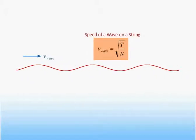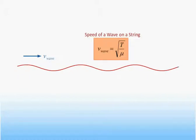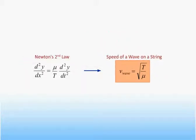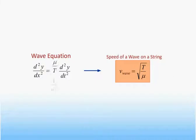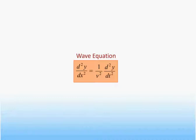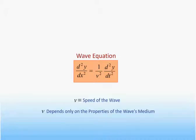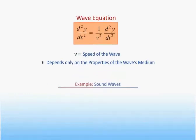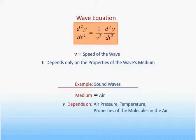On the last slide, we obtained the important result that the speed of waves on a string depends only on properties of the string itself, namely its tension and its mass per unit length. This result follows from the fact that Newton's second law in this case produces an equation known as the wave equation, which states that the second derivative of the displacement with respect to space is proportional to the second derivative of the displacement with respect to time, where the constant of proportionality is given by one over the speed of the wave squared. This equation is the defining equation for waves. The characteristic speed of the wave is determined by the constant in this equation, which will always depend only on the properties of the medium. For example, for sound waves, the medium is the air, and the speed depends on factors like the air pressure and temperature, as well as the properties of the molecules in the air itself.